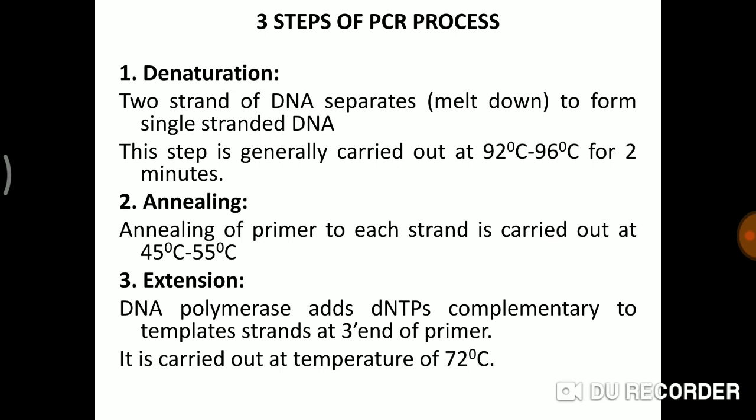The melting temperature mainly depends on two things: one is length, and second is G+C content. If the G+C content is higher, there is triple bonding, and to melt or denature that, you need a higher temperature. If the length of the desired segment is greater, the denaturation temperature and time will also increase. This step is generally carried out at 92 to 96 degrees centigrade for two minutes.